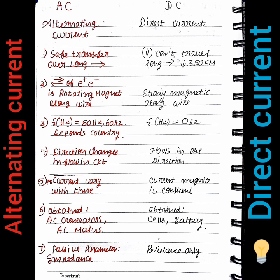For AC power, we can obtain it from AC generators and the AC mains. For DC, we can obtain it from cells and batteries.